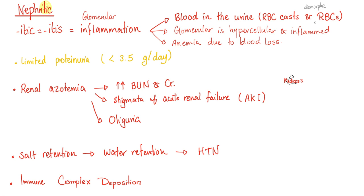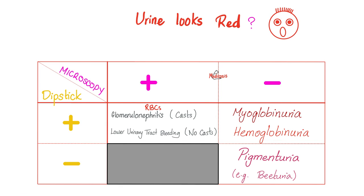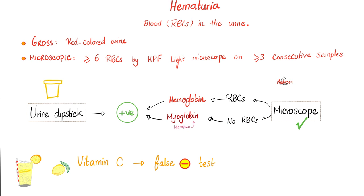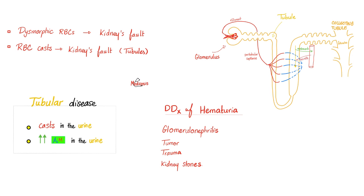Some nephritic syndrome pathologies have immune complex deposition; others do not. When the urine looks dark, that doesn't necessarily mean blood cells — it could be just a pigment, myoglobin, or hemoglobin. To confirm actual red blood cells, you have to look under the microscope. Also, the urine dipstick is not the best tool, because it cannot tell the difference between hemoglobin, myoglobin, and actual individual red blood cells. The microscope can tell the difference.